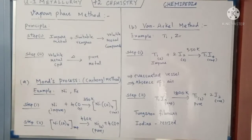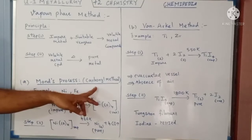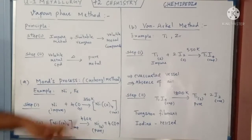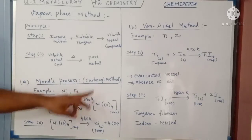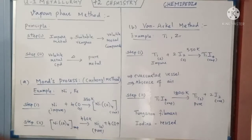We have two different vapor phase methods. The first one is the Mond process, also called the carbonyl method. In this method, the metal is made into a carbonyl compound — that is why it is called the carbonyl method.